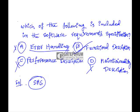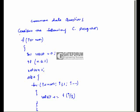Only functional description is required in the software requirements specification, so option B is the right answer. This is common data for two questions. A C program is given, and the first question is: what is the return value of the function when num is equal to six?